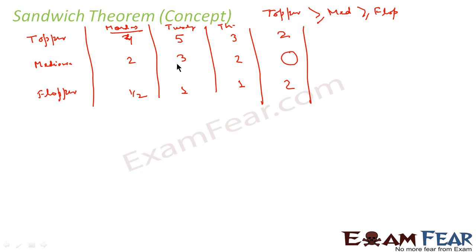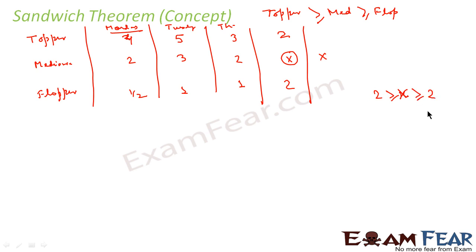Since the topper always watches more than the mediocre, two is always greater than or equal to x — where x is the mediocre's hours. Also, the mediocre is always greater than the flopper, and the flopper also watched two hours, so x is always greater than or equal to two. That means x is less than or equal to two and greater than or equal to two, so the only value satisfying this condition is x equals two.